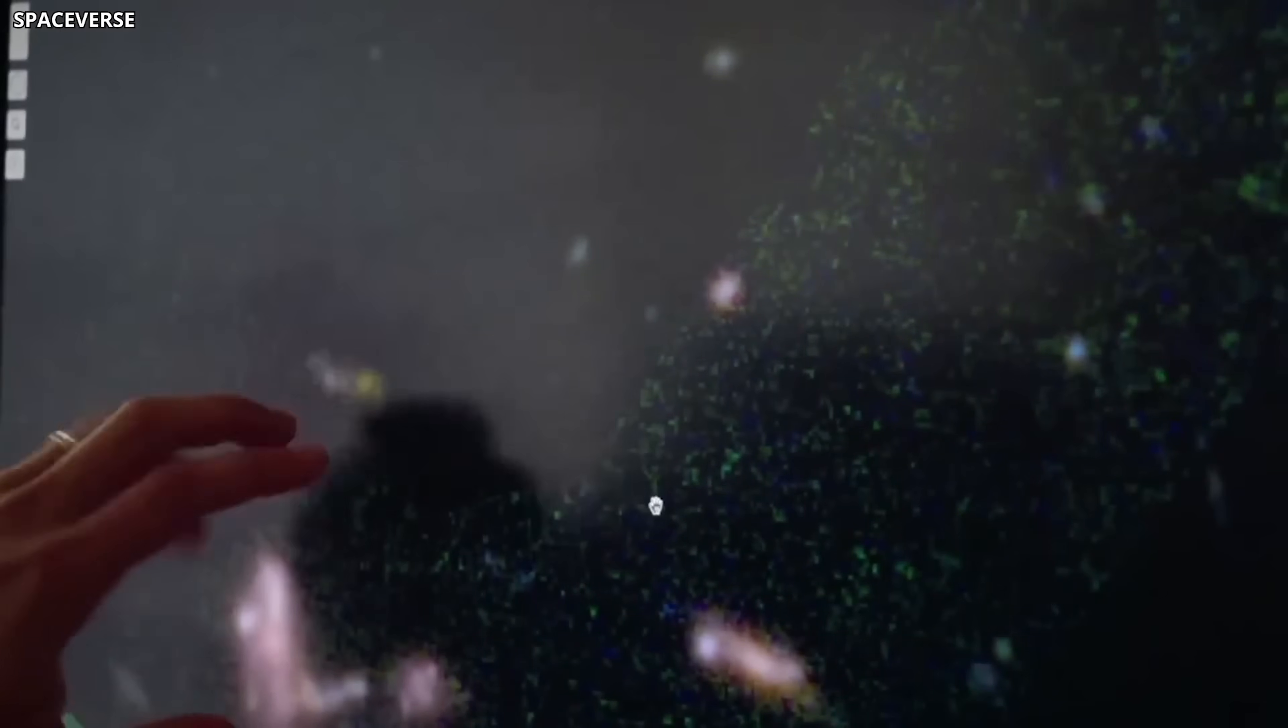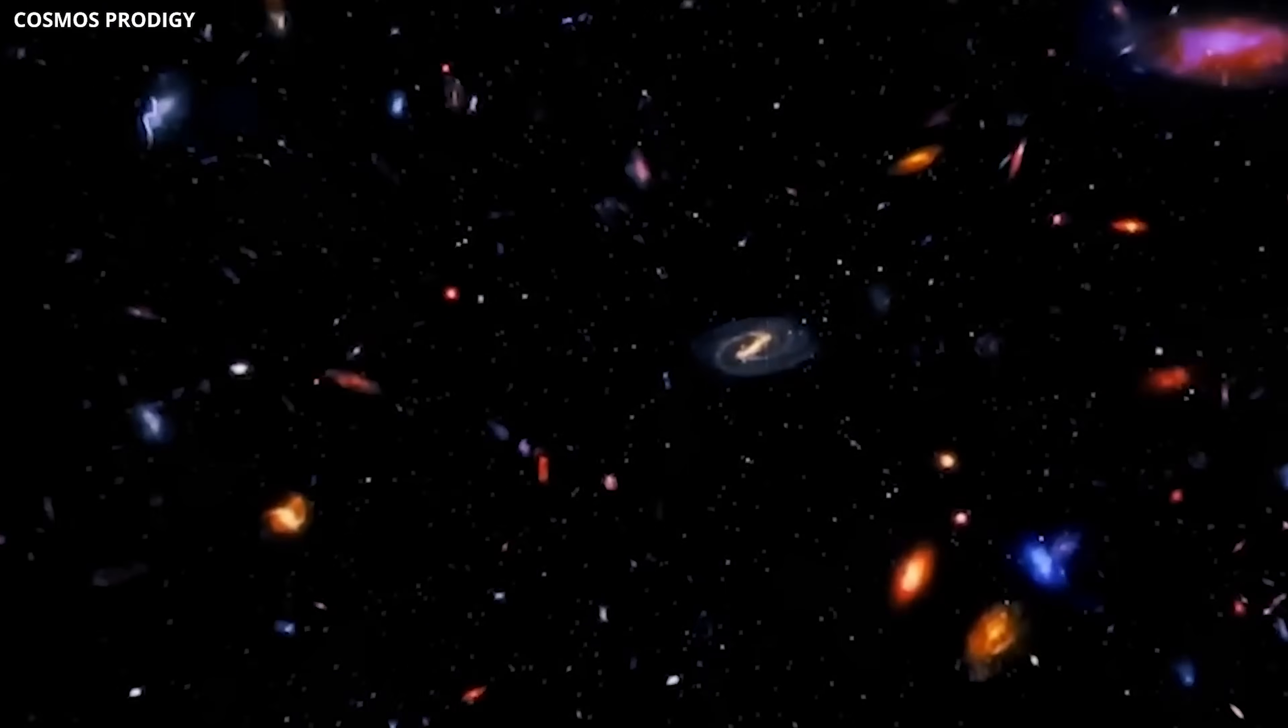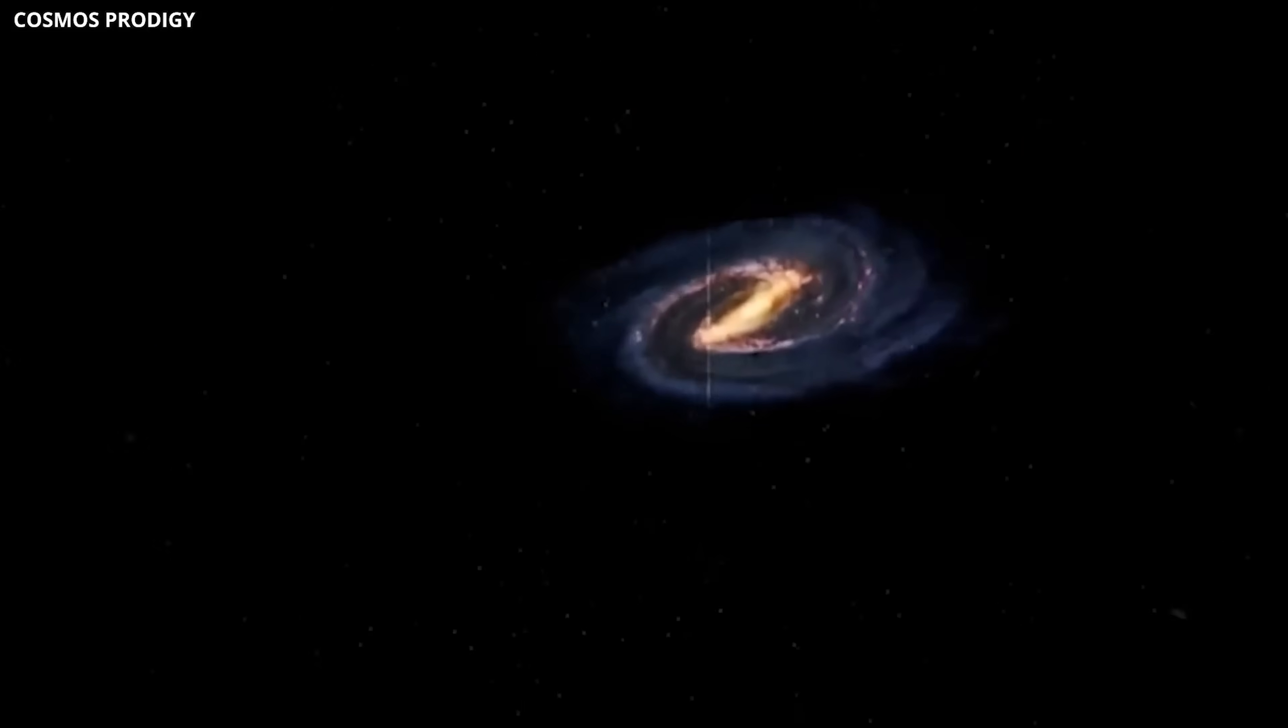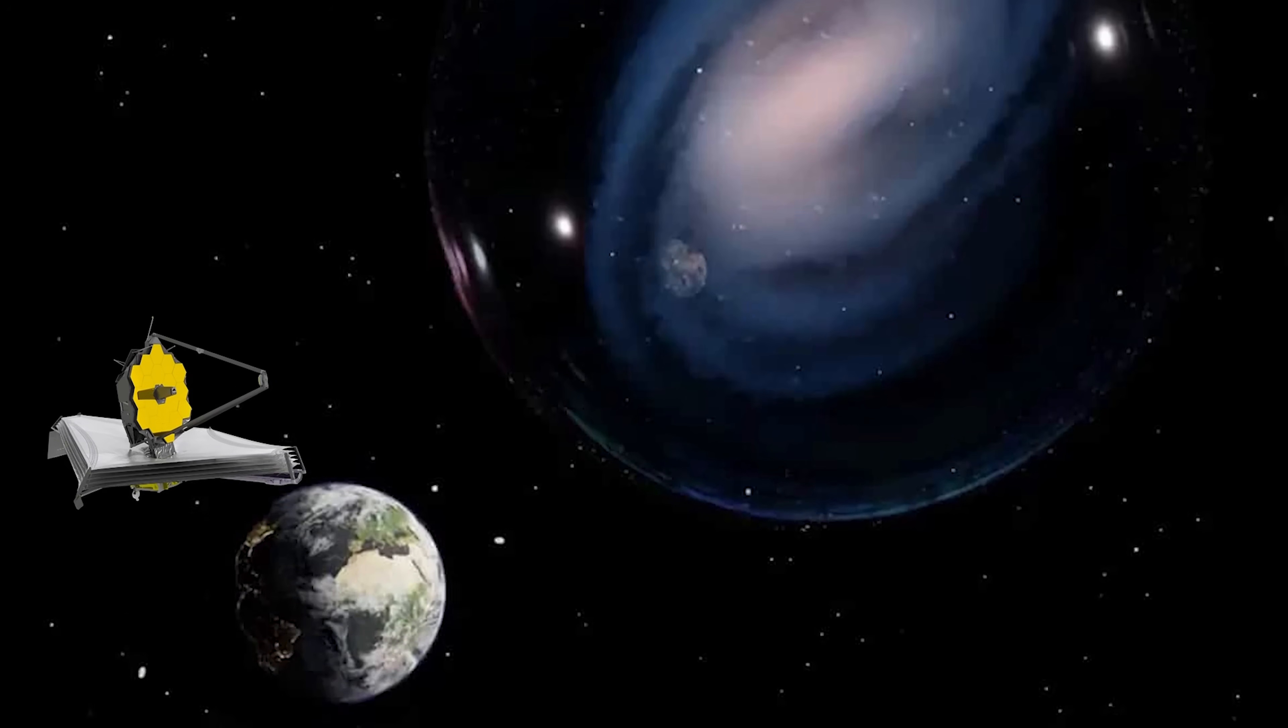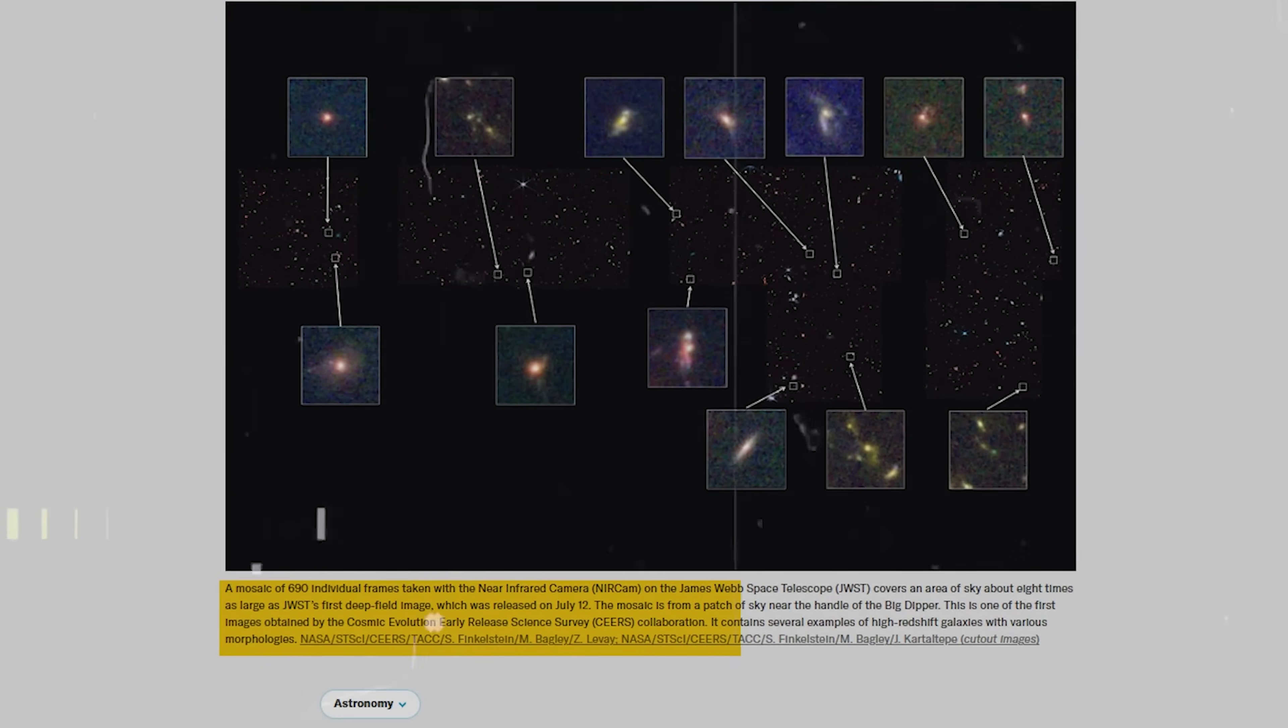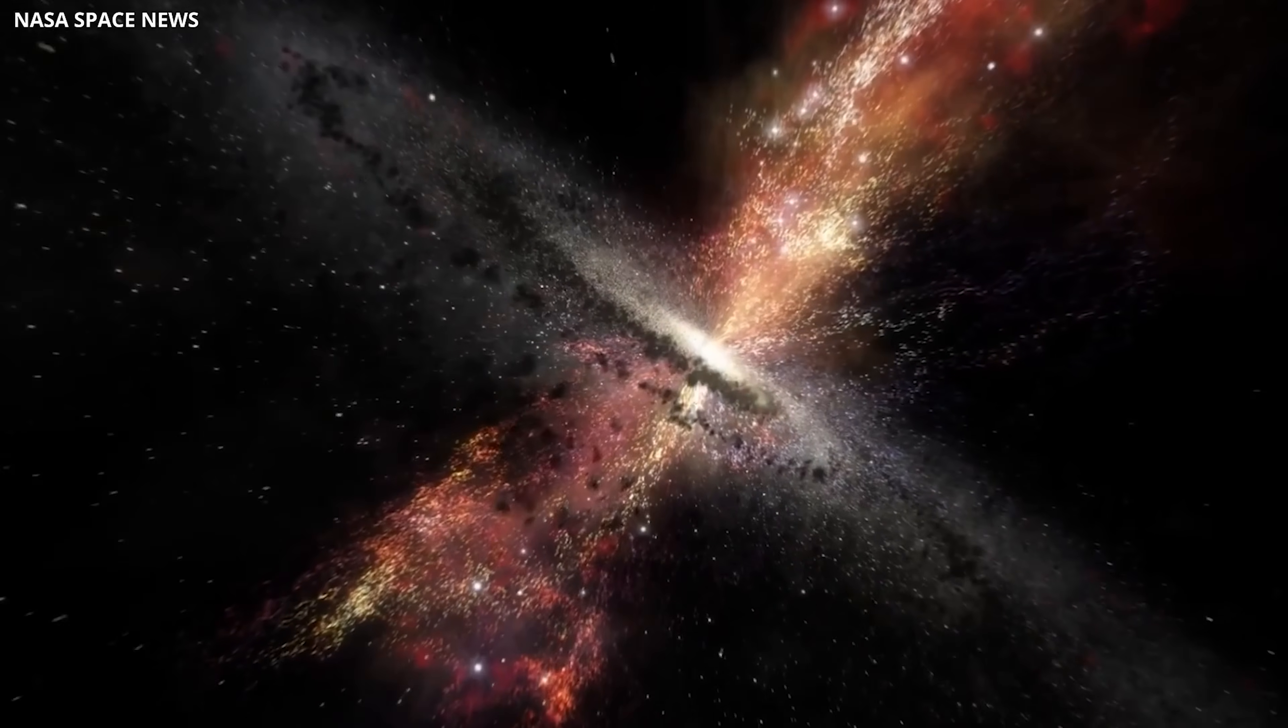Until now, astronomers believed such structures emerged much later, once galaxies had fully matured. Hubble's earlier surveys suggested that barred galaxies were rare in the early universe. Webb's discovery of Sirius 2112 overturns this view, showing that Milky Way-like galaxies already existed nearly 12 billion years ago, when the universe was just 15% of its current age.